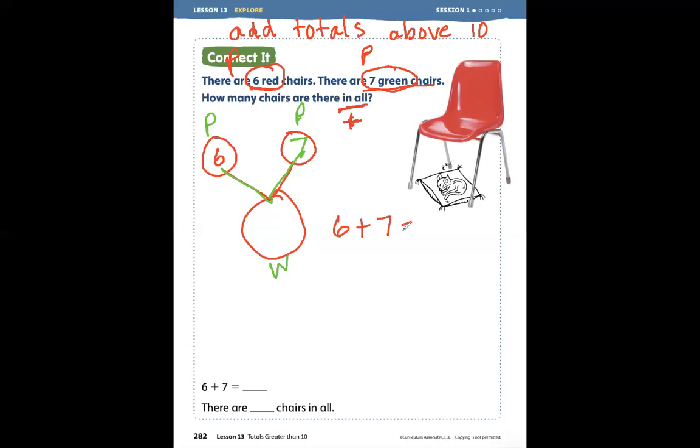So if I have six, I'm going to draw six chairs: one, two, three, four, five, six. Then I have seven green chairs: one, two, three, four, five, six, seven. Putting them together, now I have one group of ten plus three more. Ten plus three equals thirteen.